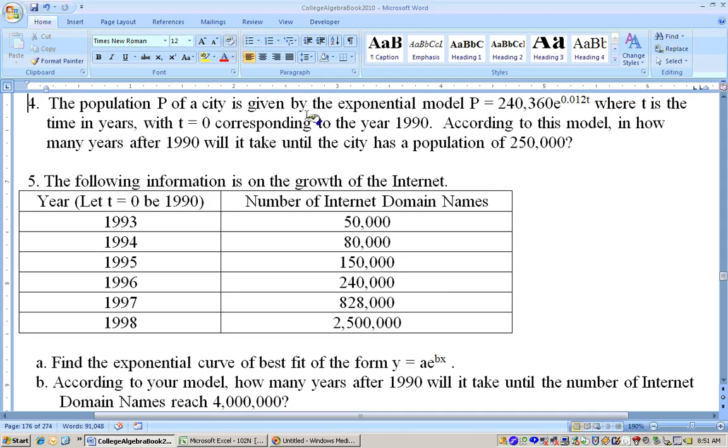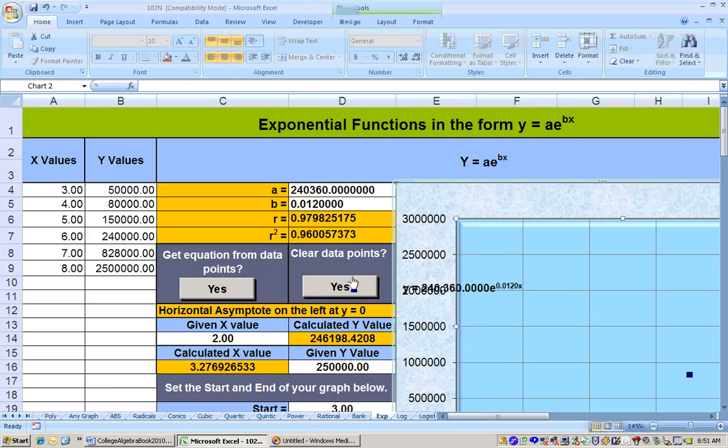On problem 4 it says the population p of a city is given by this exponential function right here. Where t is the time in years and t equals 0 is 1990. According to the model, how many years after 1990 will it take until the population has 250,000? It gives you the exponential function. Just go to the exponential sheet. Put in your coefficients, which are for your a, your 240,360. And for your b, it's 0.012. It's telling you a population, that's your y value. So, just substitute in 250,000 for y and we get the answer right here of 3.28 years rounded to the nearest hundredth. If anything's ever in your way over here, you can always just move it out of the way.